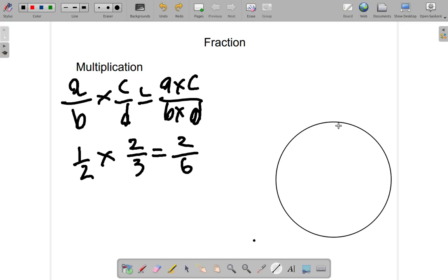So you half the circle. Then, for each half, you third it. Now, two thirds, two of these thirds, it becomes two out of six when you multiply it by a half.